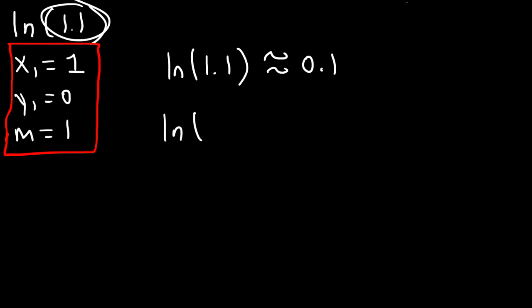Now let's find the real answer. Go ahead and type in ln 1.1. This is equal to 0.0953. So 0.0953 and 0.1 are pretty close — not too far off. You might have about a 5% difference, but 0.0953 can be rounded to 0.1.